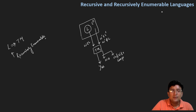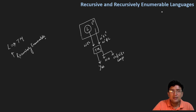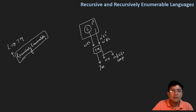तो अगर हमने ऐसी Turing machine बनाई है language L के लिए जो कि recognize तो कर लेती है कि कोई string इसका part है या नहीं है, लेकिन reject नहीं कर पाती — मतलब यह है कि अगर language complement में से हमने कोई string ले ली, तो या तो यह no बताएगी या तो फिर infinite loop में चली जाएगी — तो ऐसे case में जो language है, इसको हम कहेंगे कि that language is recursively enumerable language.